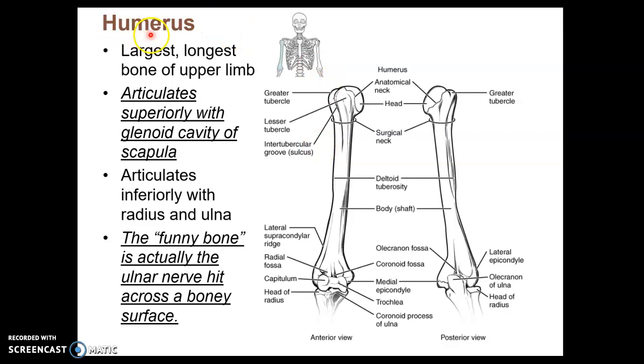So we'll start with the humerus, which is the arm bone and the longest bone in the upper limb. There are a lot of landmarks on the humerus that we learn in lab, like the head at the proximal end.